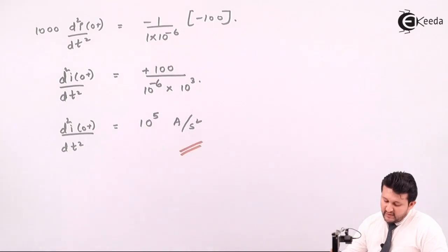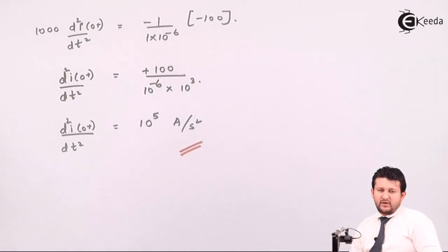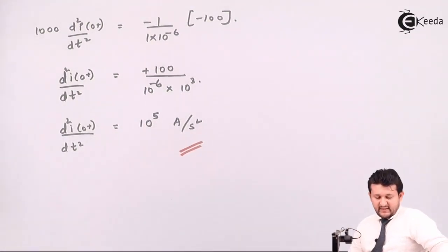So that was Type 2 transient analysis with a combination of resistance and capacitor. Let's go for Type 3. Thank you so much for being here.